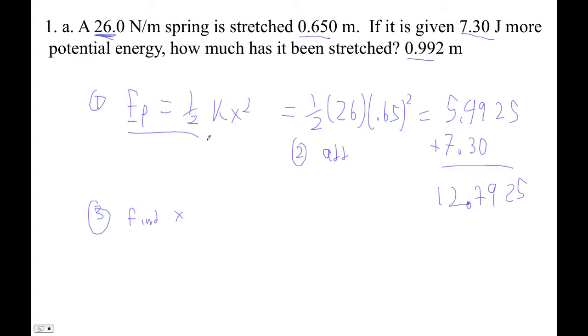So using this formula, right? Okay, so 12.9, whoops, 7.9, that's supposed to be a 7. Does it look like a 7? 7.925 is one-half 26x squared. So now we're solving for x.